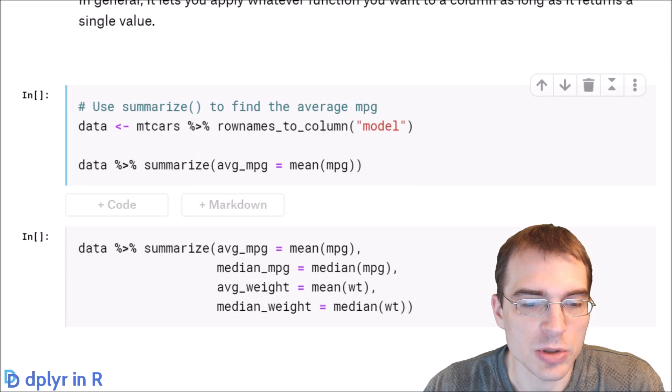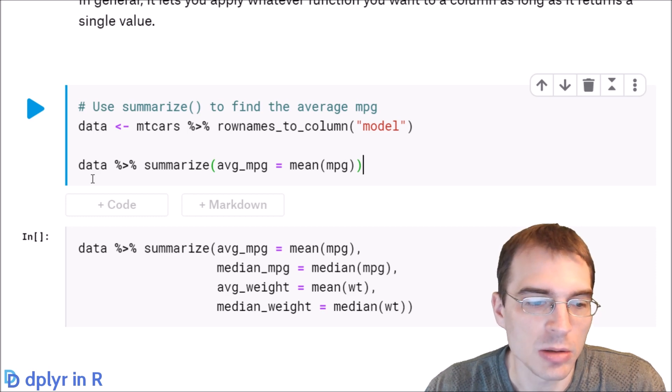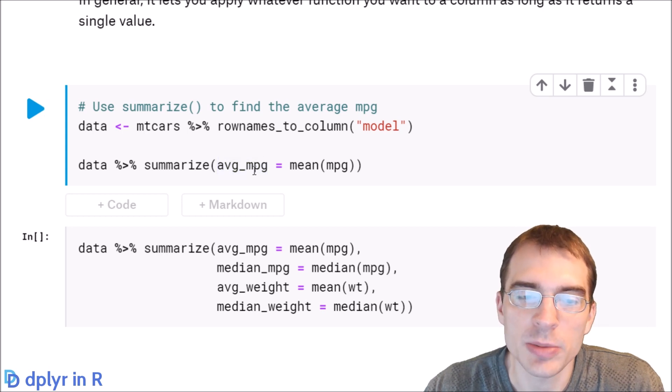To start off with, we're just going to load the mtcars data set and show how to summarize a column showing its mean. So we're loading in the data. The first part of the summarize argument is the name of the new summary column you want to make. So we're going to call this summary average MPG.